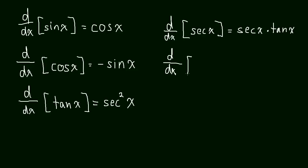The derivative of cosecant x is equal to negative cosecant x times cotangent x.